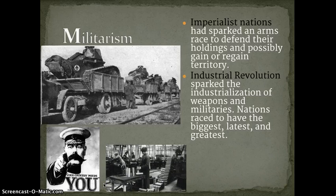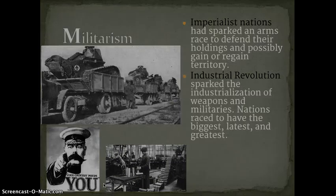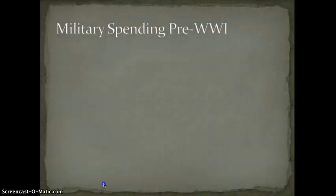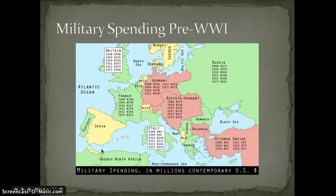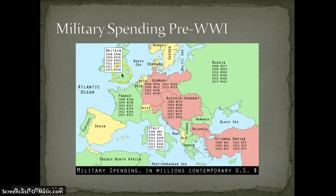Here you have factory workers and big machines being used on a military scale. Here's military spending pre-World War I in contemporary U.S. dollars all the way up to 1913 when the war started. You can see the big spenders — Britain, even in 1908, was spending $308 million. Germany was the big spender at $396 million, increasing intensively to $573 million, way outpacing the British by 1913, as the Russians were also big spenders in this area. You can see that competition before the war.